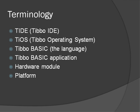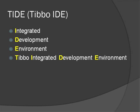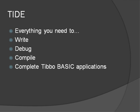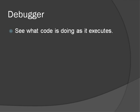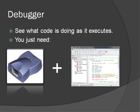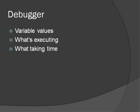Let's check out TIDE, or TiVo IDE. IDE stands for Integrated Development Environment. TIDE contains everything you need to write, debug, and compile complete TiVoBasic applications. The debugger lets you see what code is doing as it executes. You don't need an ICE machine or anything expensive like that — you just need a TiVo device and TIDE. The debugger lets you look at variable values, what's executing, what's taking time, what's happening logically in terms of control structures, etc. It's very cool.